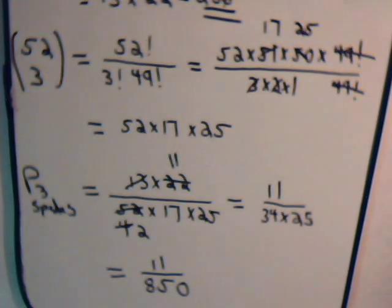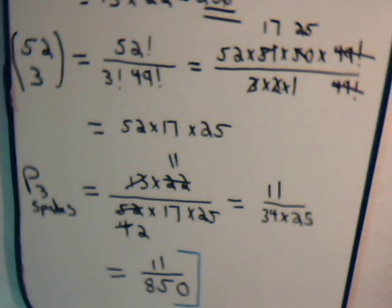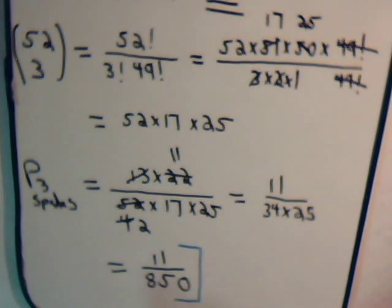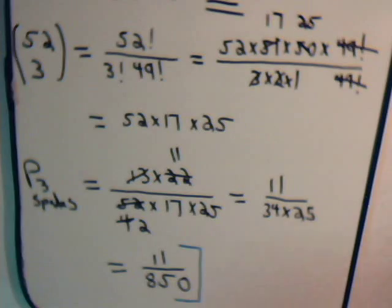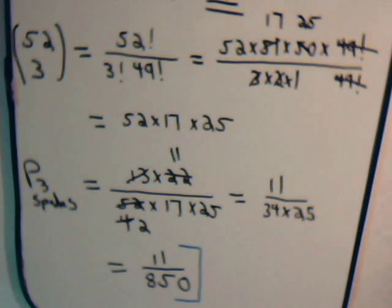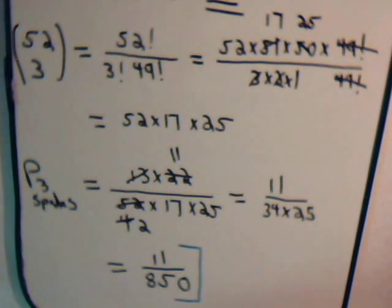So that tells us: when you have a standard deck of cards and you remove 3 of them, the probability that all 3 will be spades is 11/850. That's it for this video. We wanted to go through it step by step as another demonstration of how we can use combinations to solve certain types of probability problems. In the next video, we're going to consider a simple compound event and how we handle that kind of probability. Come back and join us for that video and we'll solve some more problems.